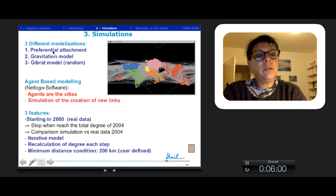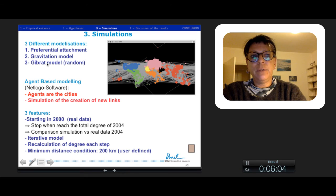We made three different models: first, the preferential attachment; second, the gravitation model; and third, the Gibrat model, a random model.